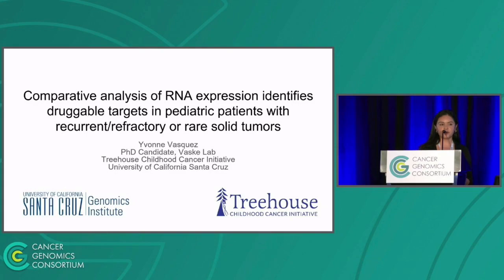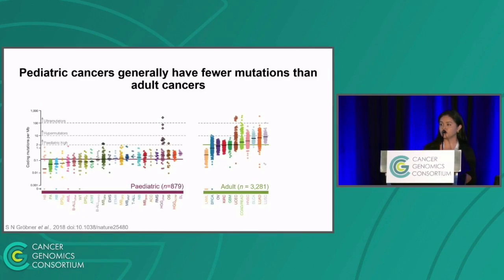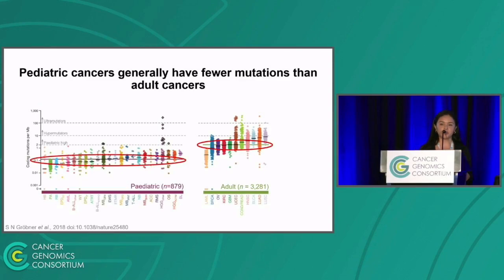As we've heard from speakers so far, there are many different avenues to study cancer, so you might be wondering why we've chosen to focus on RNA for pediatric cancers. Although cancer is regarded as a genetic disease caused by the accumulation of mutations over time, this explains how adult cancers arise, but not quite pediatric cancers, which have a lower mutational burden. In this figure, you can see the number of mutations in coding genes for different pediatric cancers on the left and different adult cancers on the right, and on average, the number of mutations in pediatric cancers is lower compared to adults.